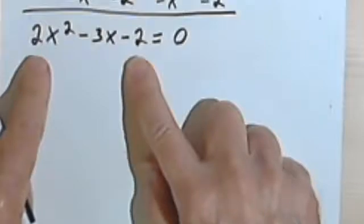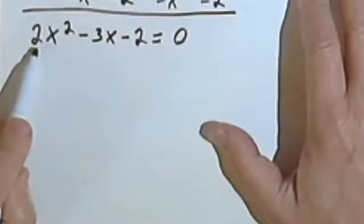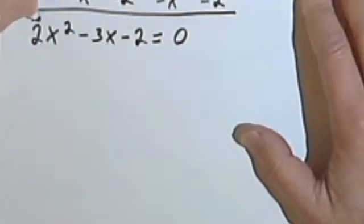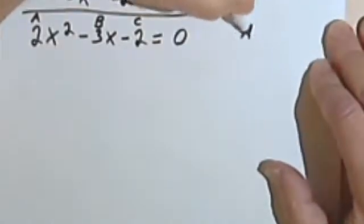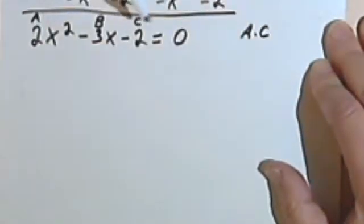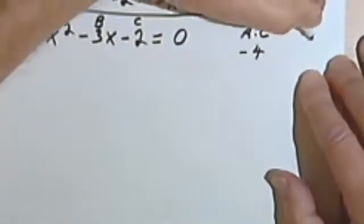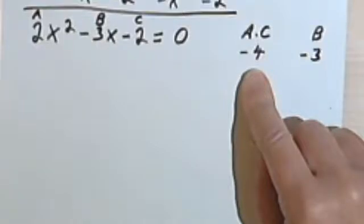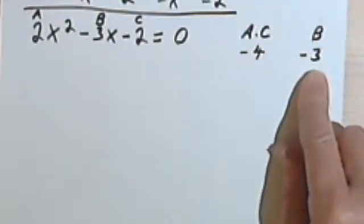I want to factor this left side. Looking at it, I realize the first coefficient is greater than 1, so I probably want to use the ac method. I'm going to think of the coefficient 2 as a, the negative 3 as b, and negative 2 as c. I want to multiply a times c, so 2 times negative 2 is negative 4. And for b, I've got a negative 3. So I'm looking for two factors of negative 4 that multiply to negative 4 and add to negative 3.